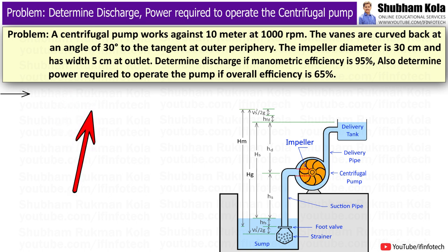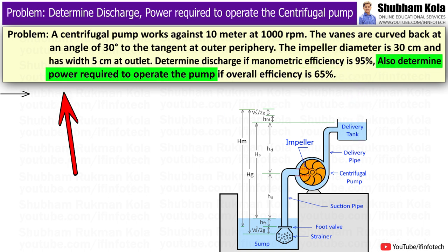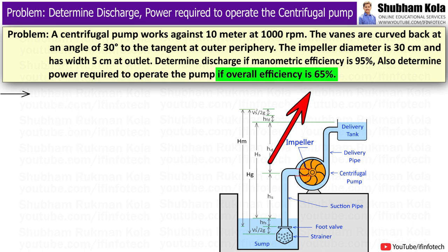The question is given as: a centrifugal pump works against 10m at 1000rpm. The vanes are curved back at an angle 30 degrees to the tangent at outer periphery. The impeller diameter is 30 cm and has width 5 cm at outlet. Determine discharge if manometric efficiency is 95%. Also determine power required to operate the pump if overall efficiency is 65%.